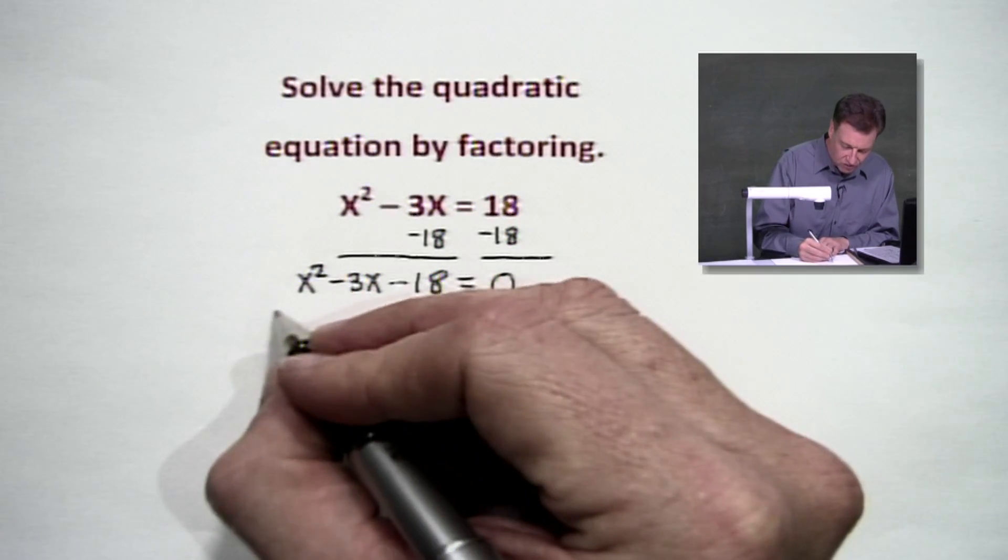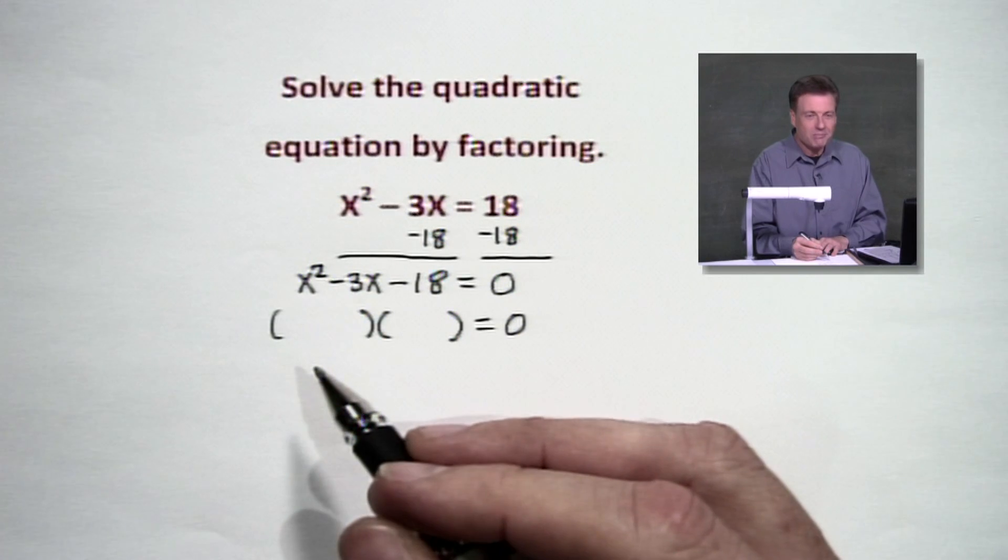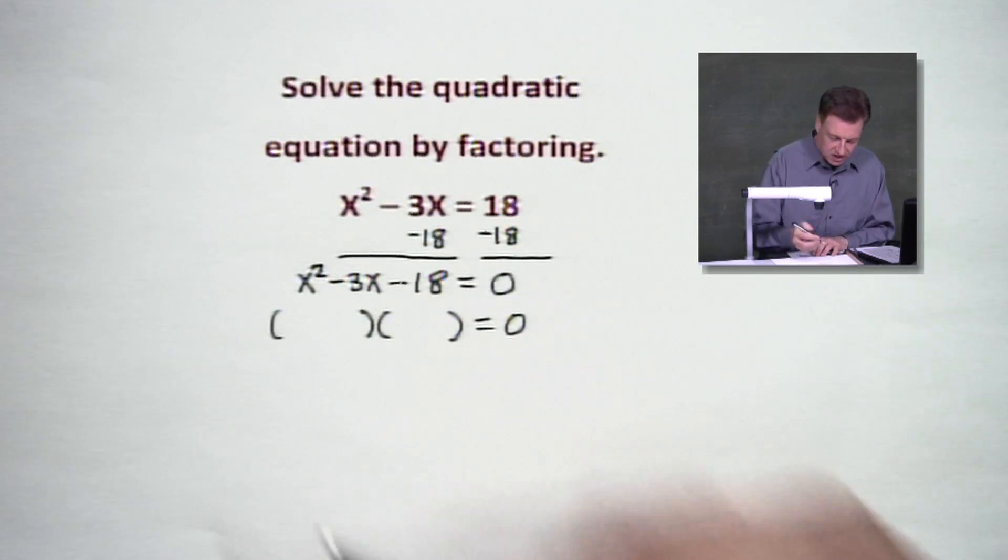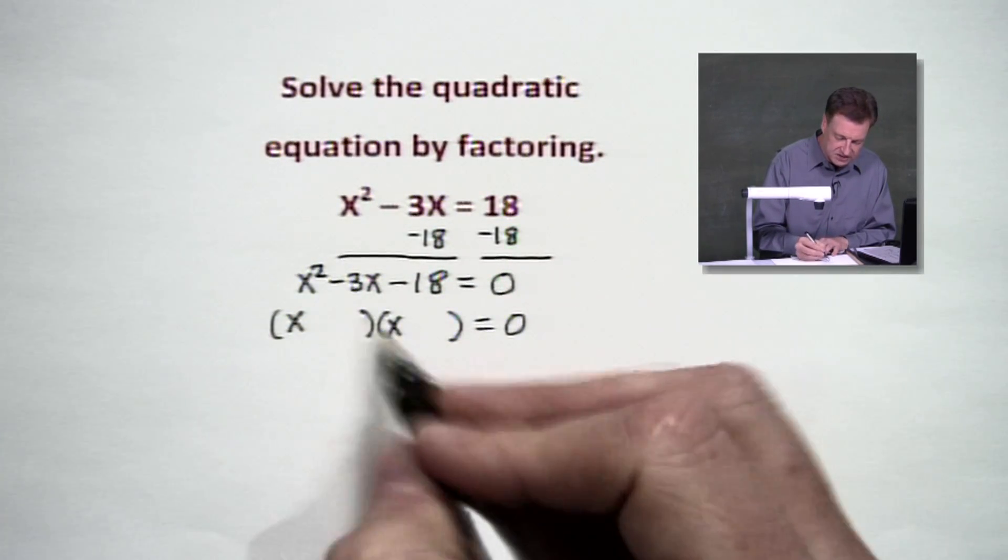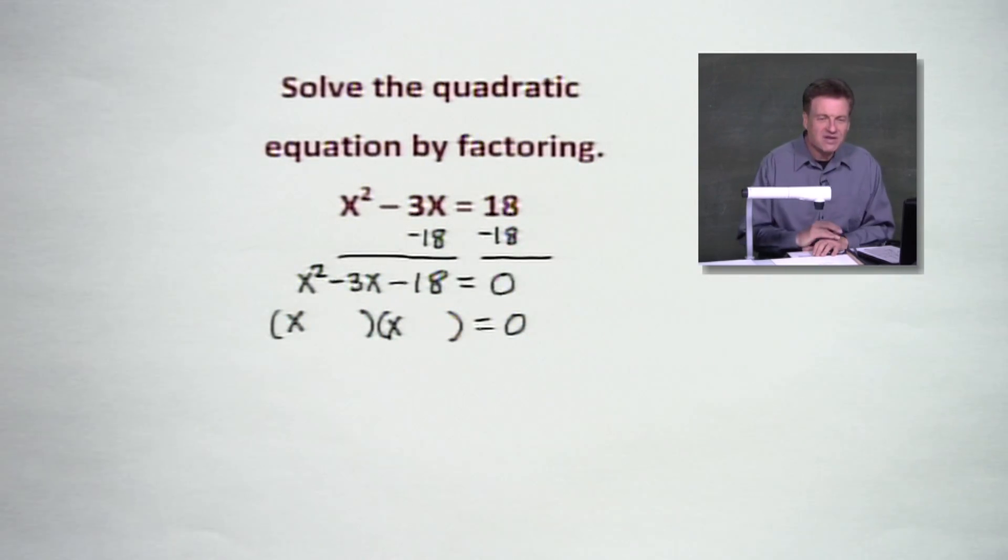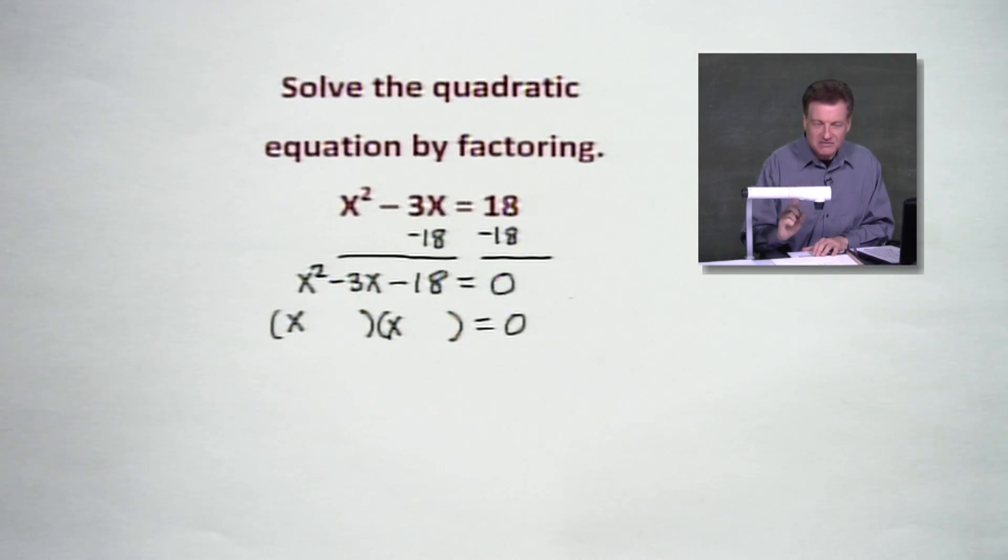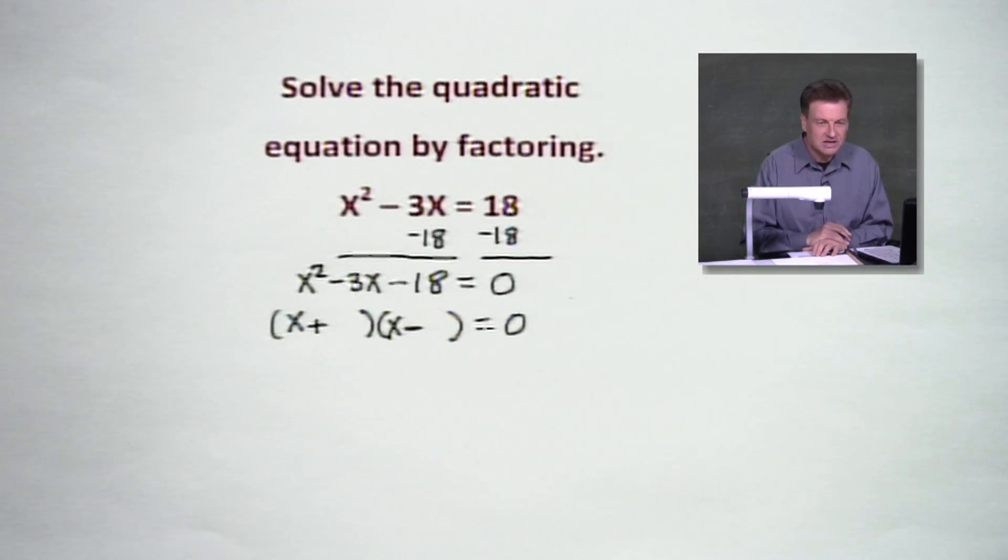These we're going to factor, which means we want to come up with two binomials, binomial expressions here, that will multiply to give us that value. So the first thing I know that I have to have is x times x, because x times x will get me to x squared. On the back end, I've got to have a negative 18. So I'm thinking about it. How can I get a negative 18? By the way, one's got to be positive and one's got to be negative. So let's go ahead and put that part in our parentheses.